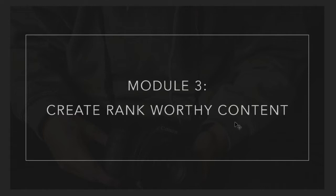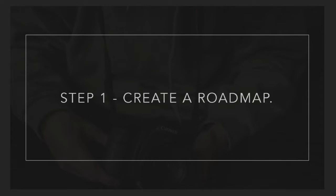It is time to create content that Google looks at and says this has authority behind it, it has relevance to my users, and I'm going to show this site in the search results. Our first step in Module 3 is going to be creating a roadmap. We're not going to be making random articles and random blog posts and just hoping for results. We're going to plan out our content in such a way that we know it is going to get results and get ranked.